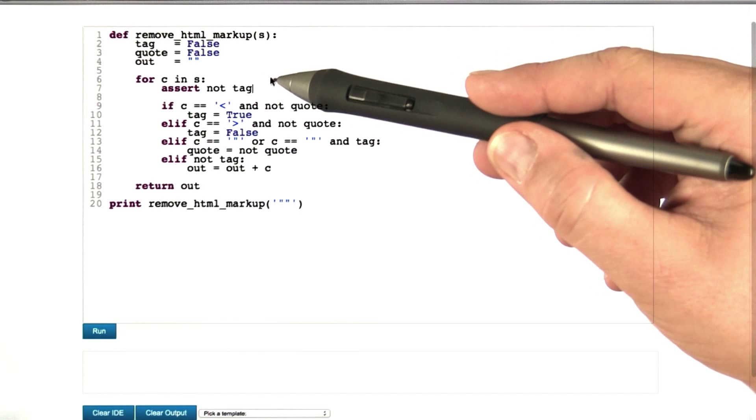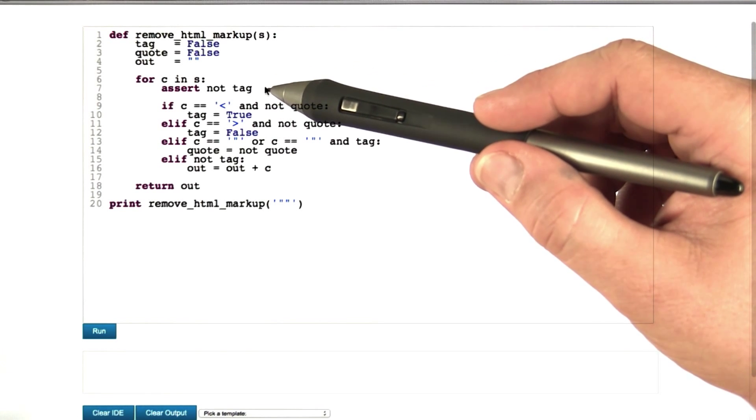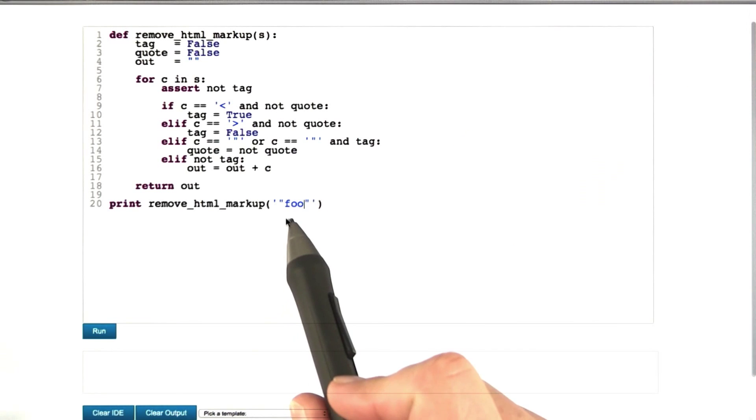With this statement, assert not tag, should tag ever be set, we will immediately get an exception. And again, we can check this with foo enclosed in double quotes.